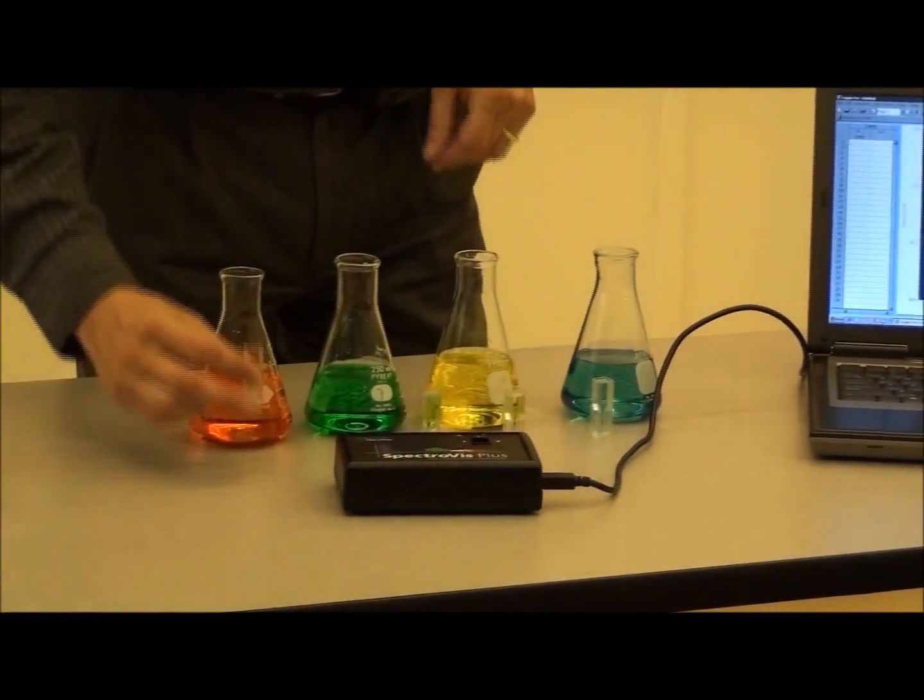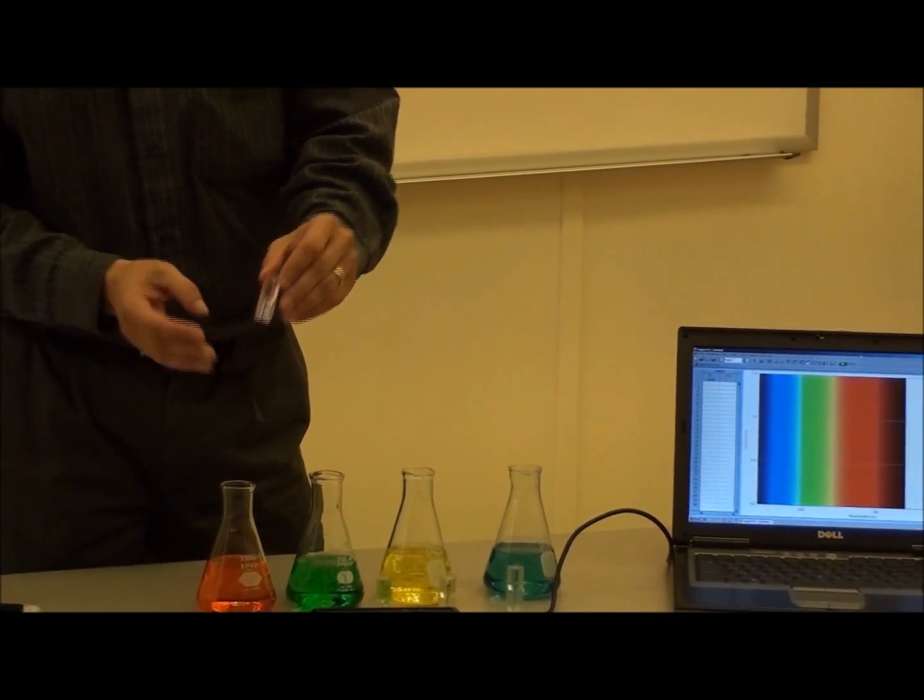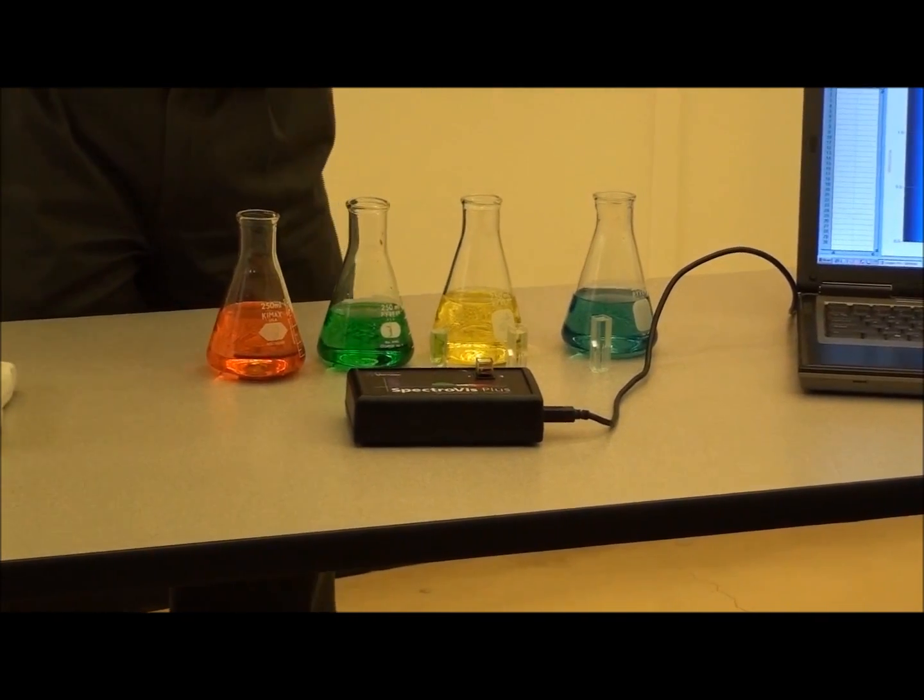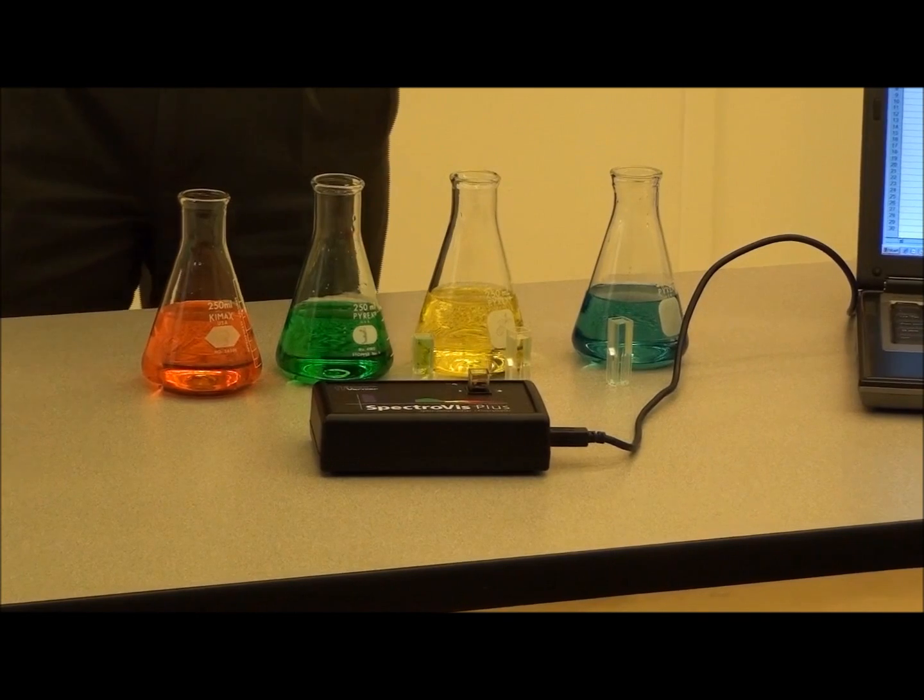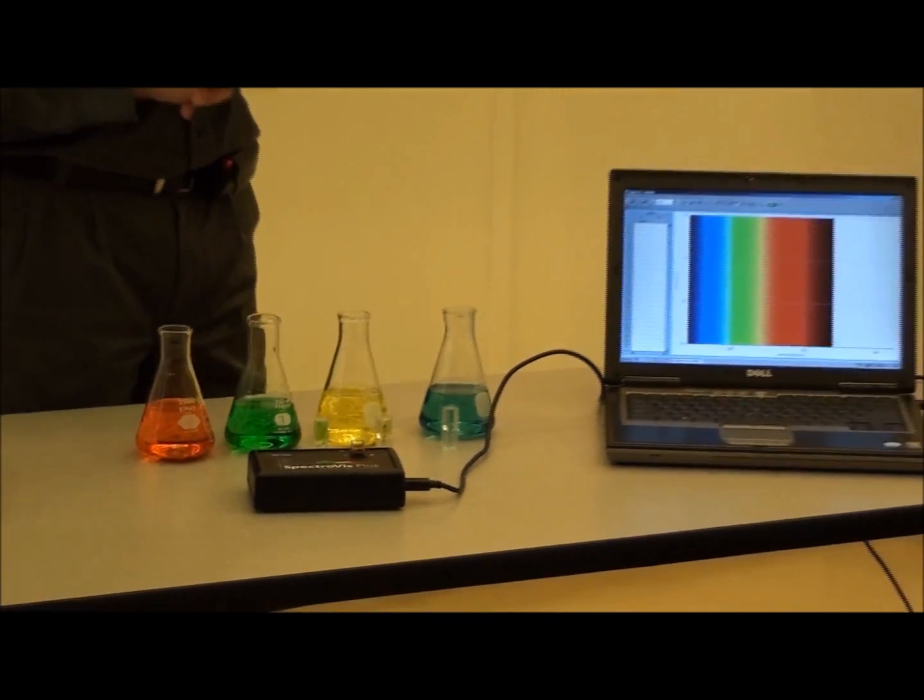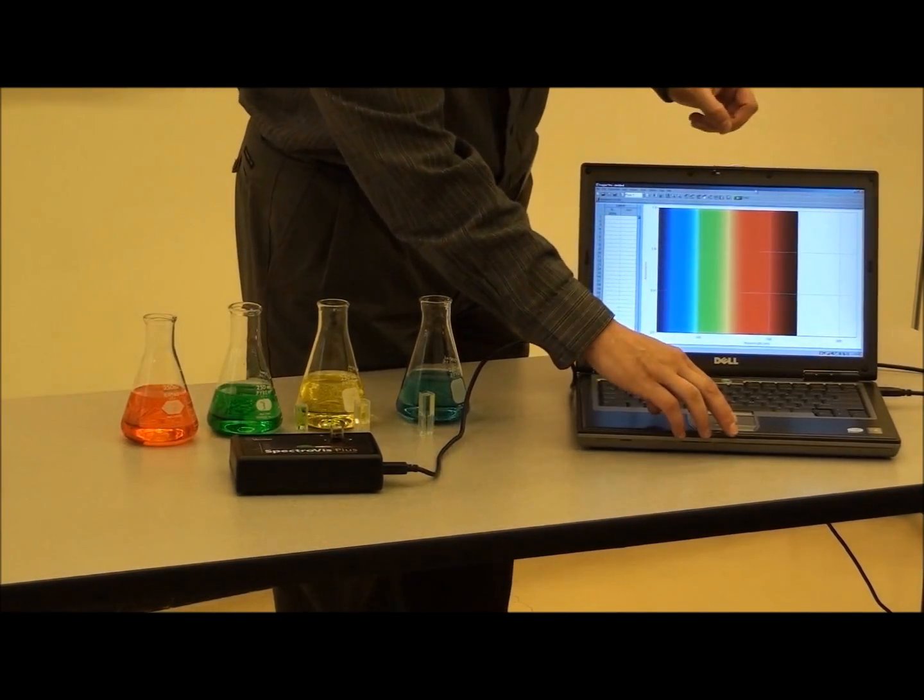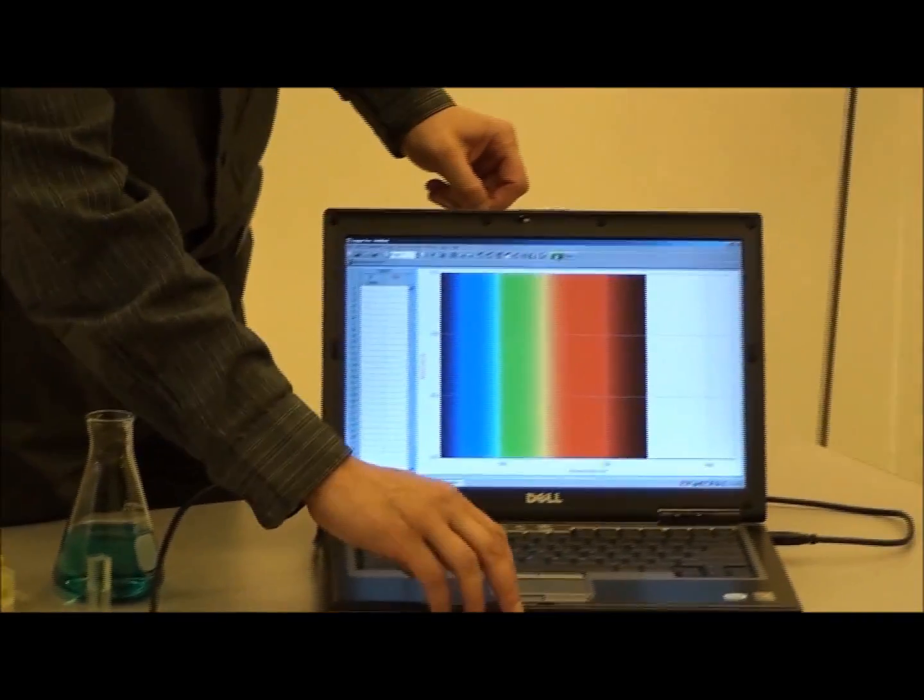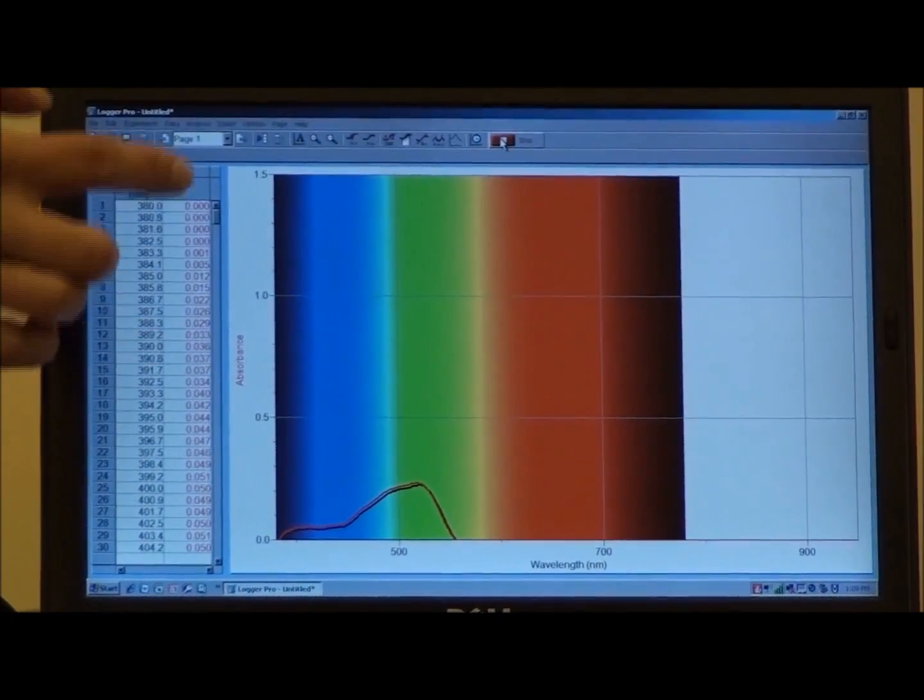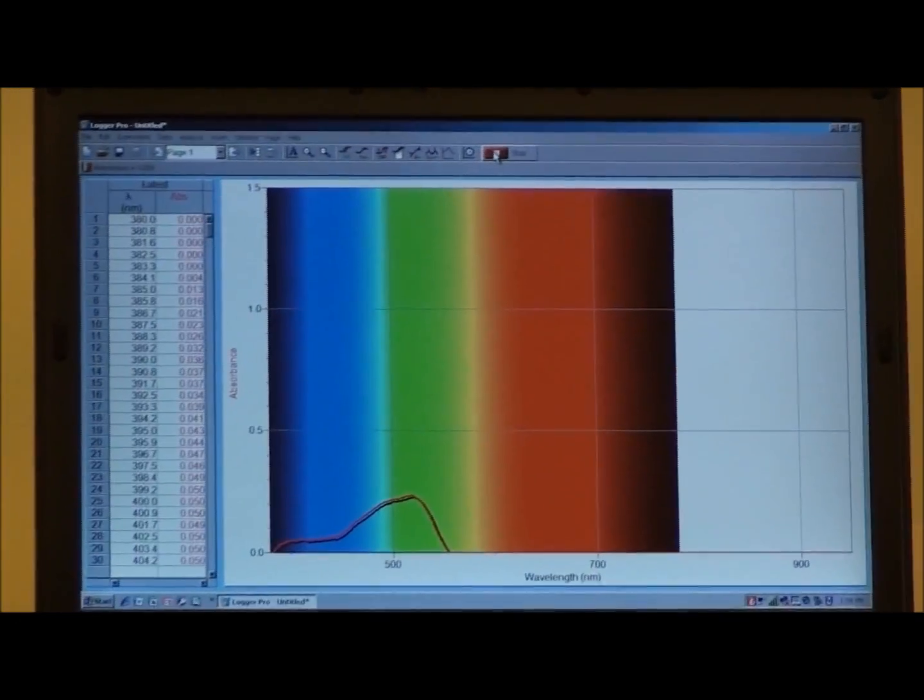Here I have a red solution in a cuvette, which I will now place into the spectrophotometer so that we can measure the absorption spectrum. This particular instrument collects the absorption data for all the visible wavelengths simultaneously. Of course, a pulse oximeter only collects the absorbance data at two wavelengths. I will now start the data collection. We can clearly see the absorbance as a function of wavelength. Note that this red solution strongly absorbs in a region that is not red, but in the blue and green regions.